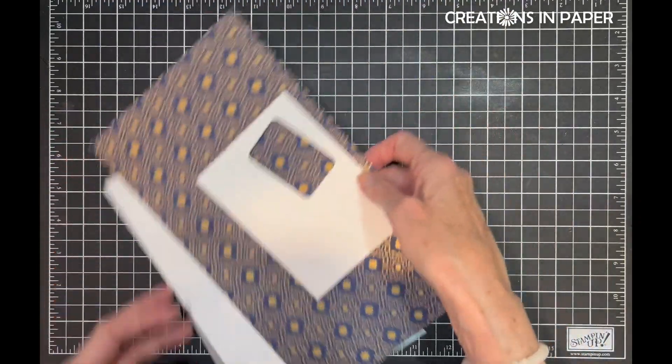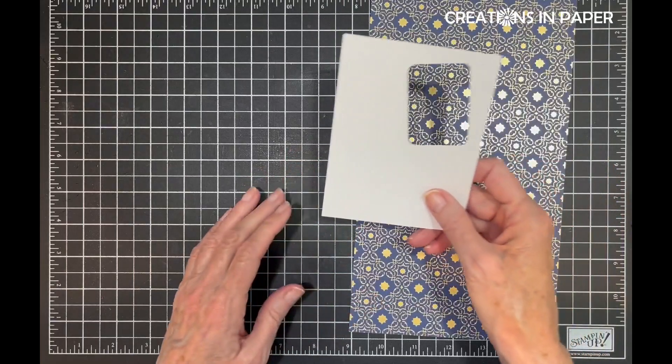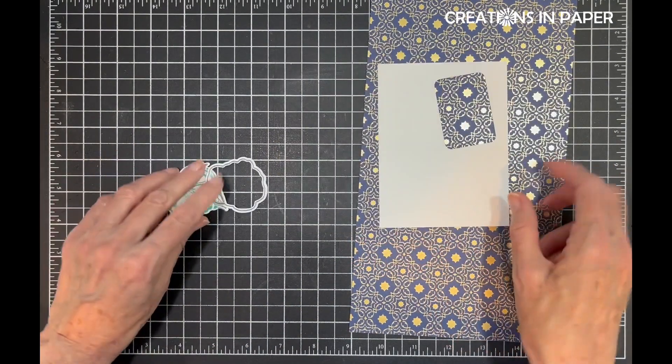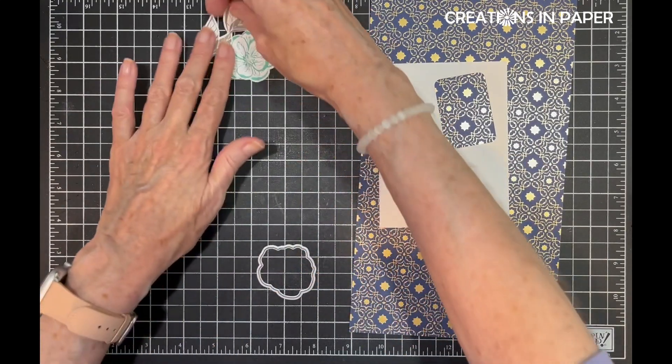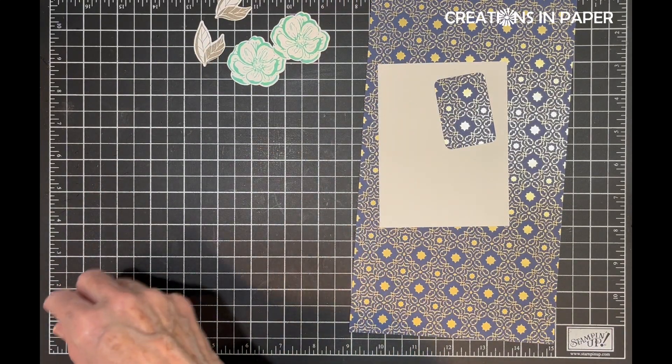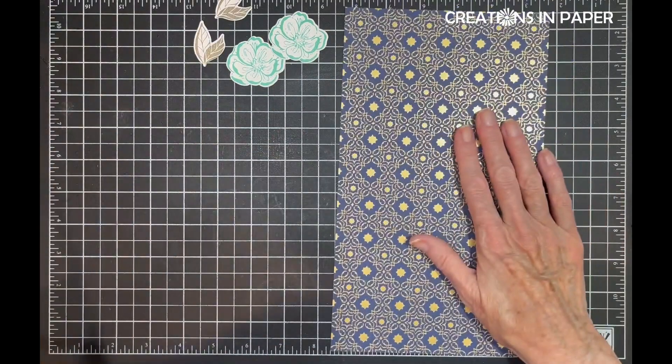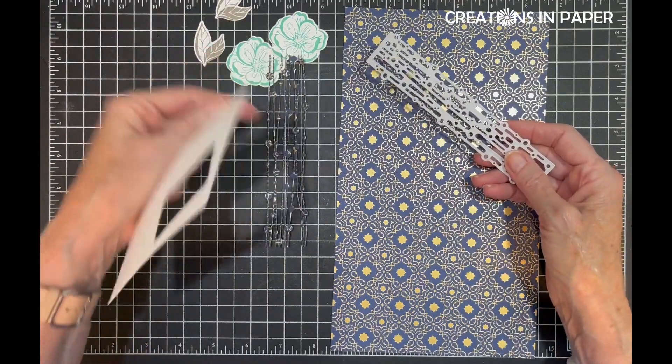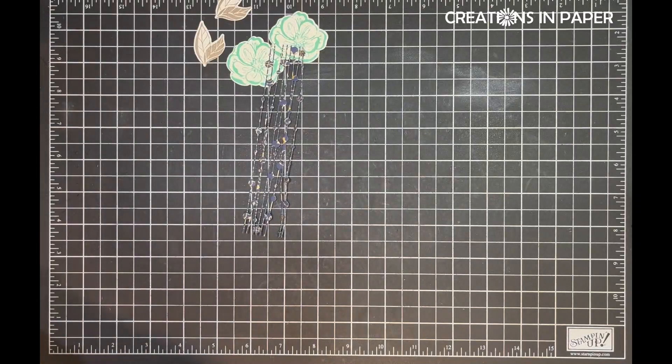The first thing I'm going to do is stamp and cut my images out. I stamped my flower in Coastal Cabana and my leaves in Gray Granite. From my piece of Shining Brightly paper, I used that image and I cut that out. So now I have my pieces ready to go.